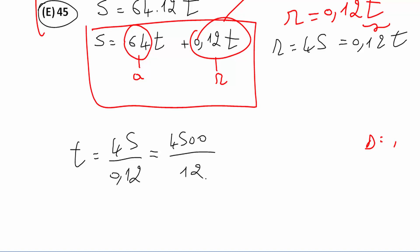So I can do the simplification easily. So now I will divide by 3. So it's 1,500 and 12 divided by 3 is 4. Now I will divide by 2. So it's 750 divided by 2.